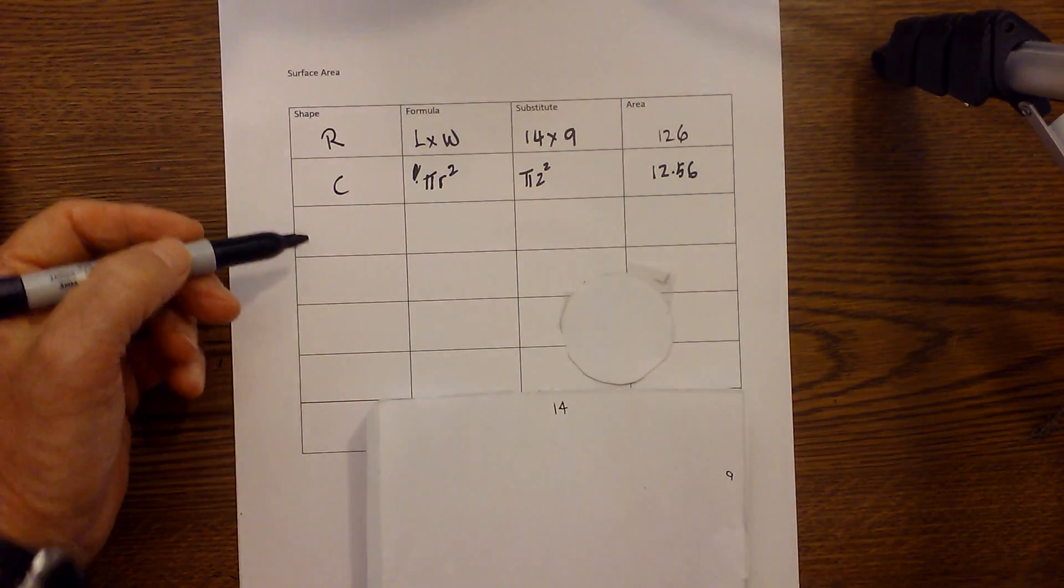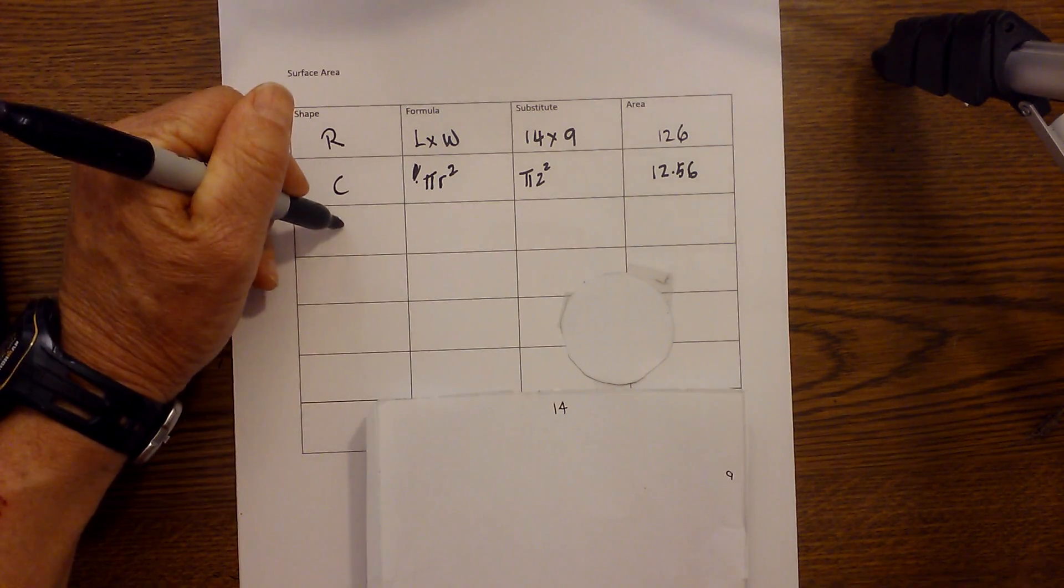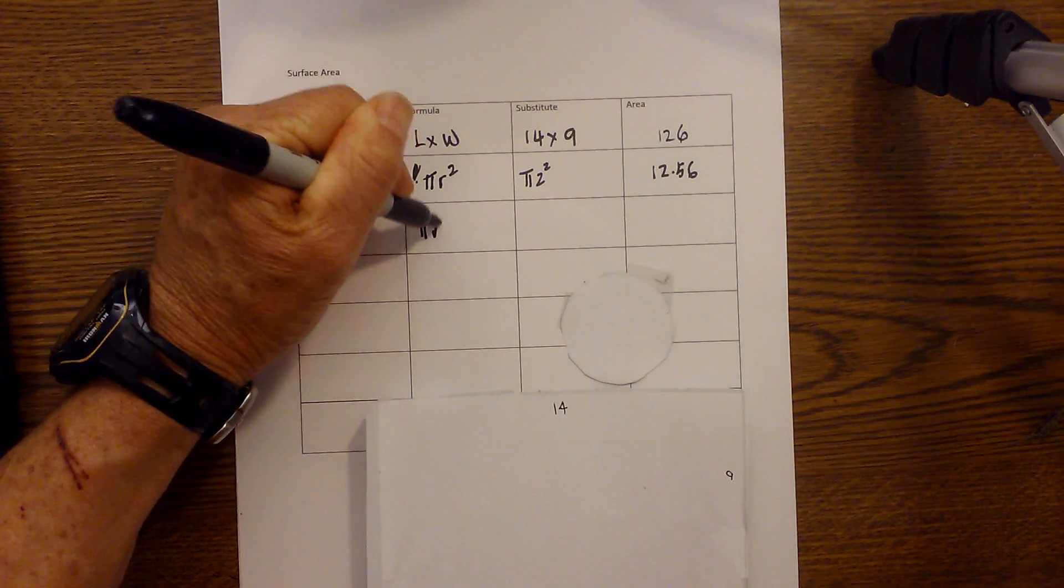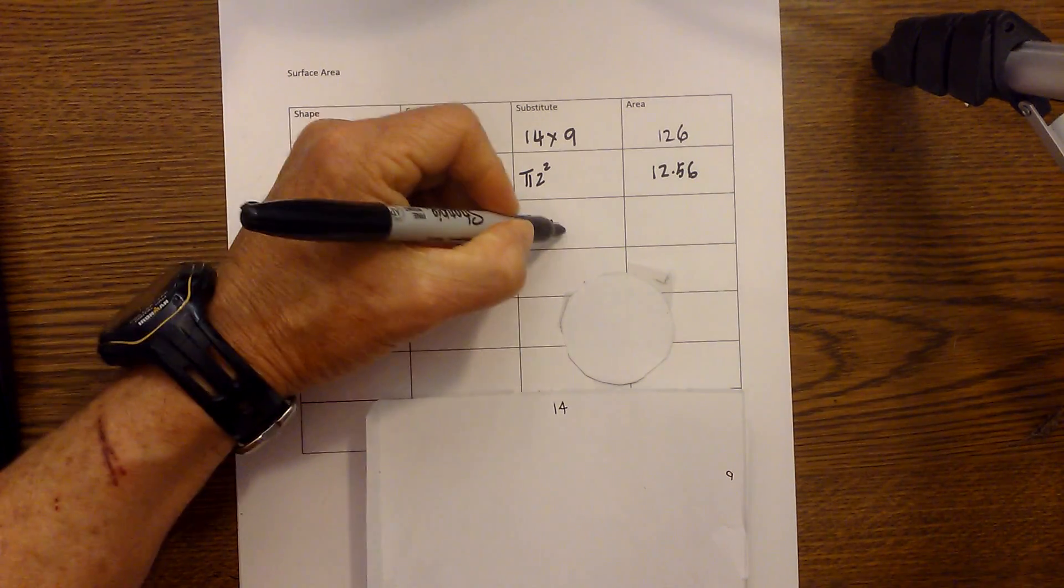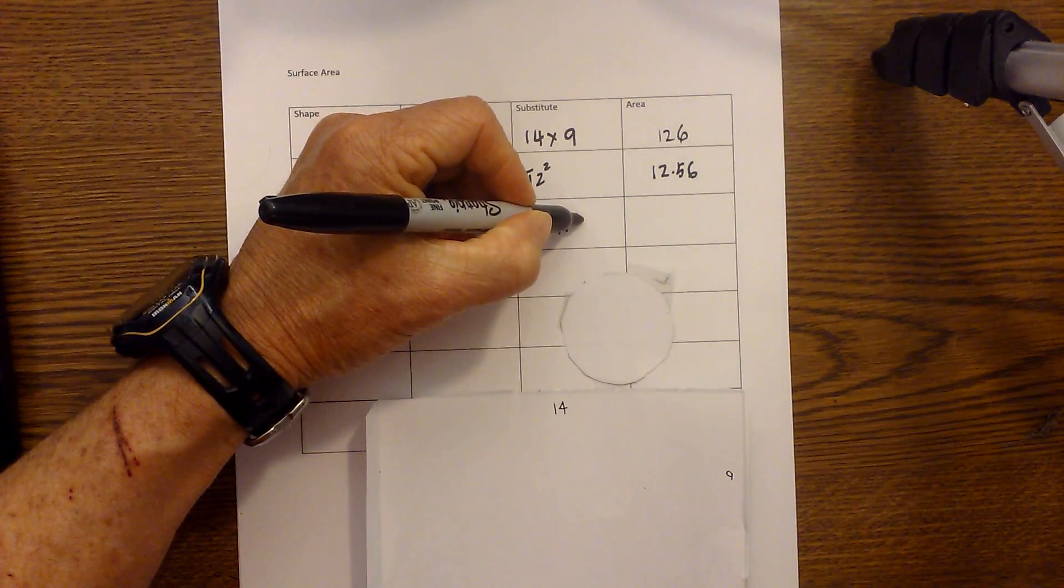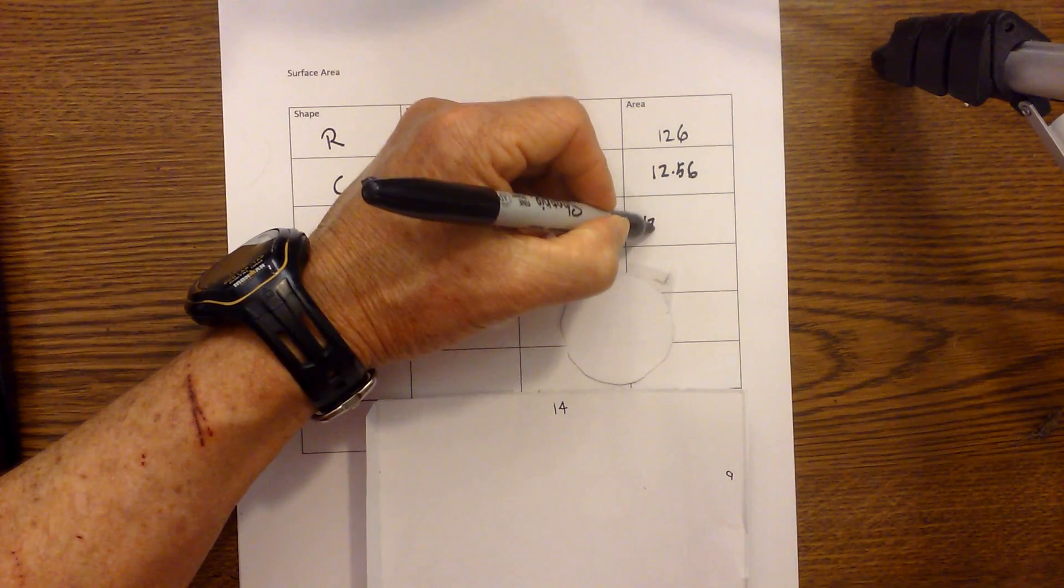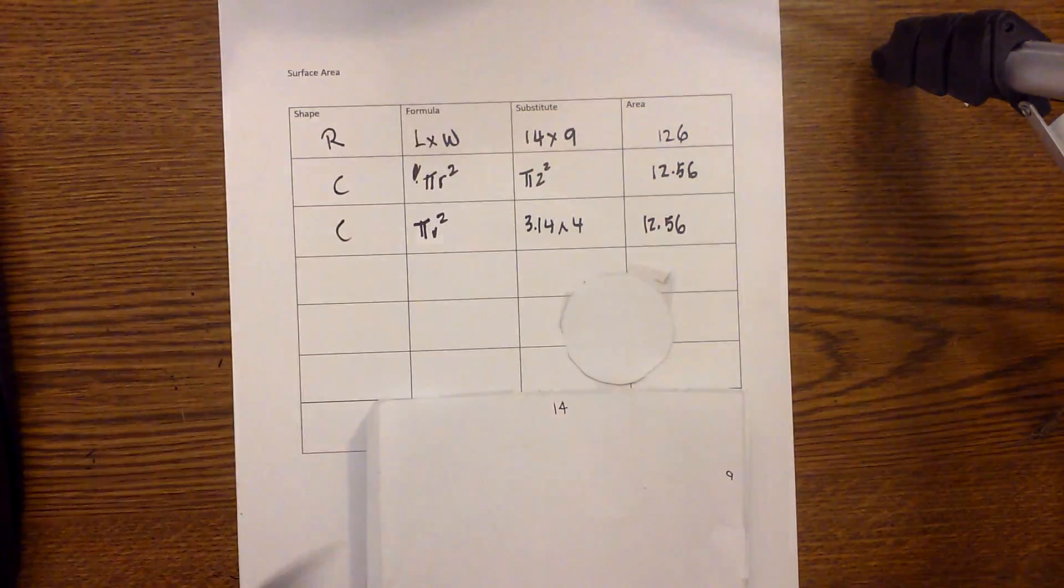And then I've got another one of these circles because remember I have three shapes. So I'm gonna go pi times radius squared, so again I'm gonna have 3.14 times 2 times 2 which is 4 and that's 12.56.